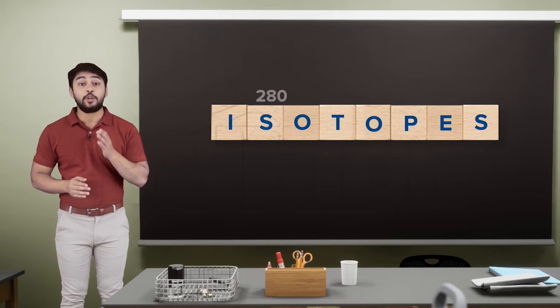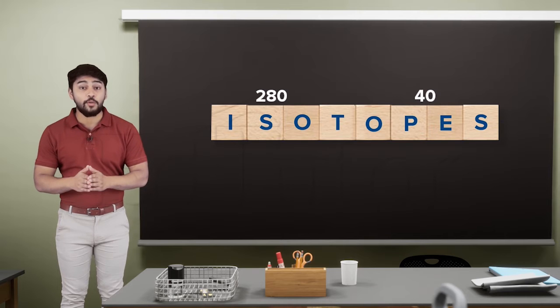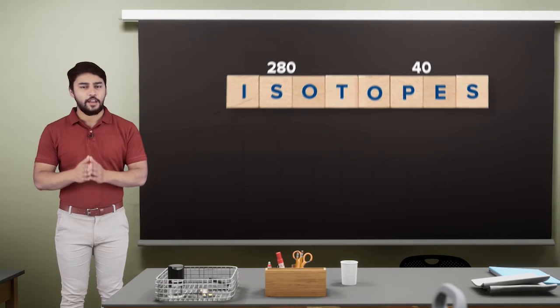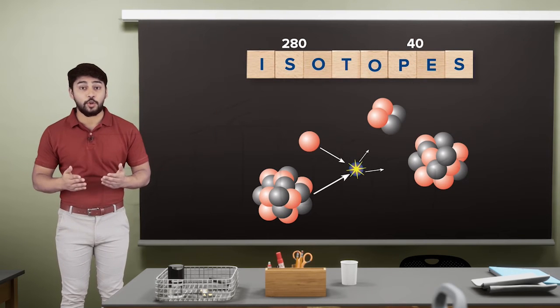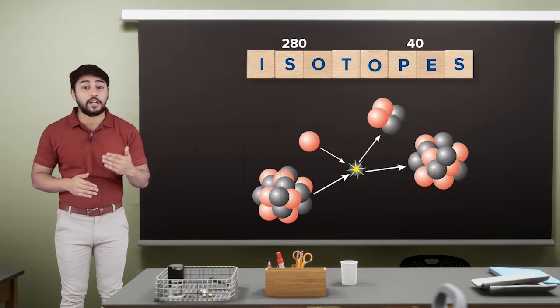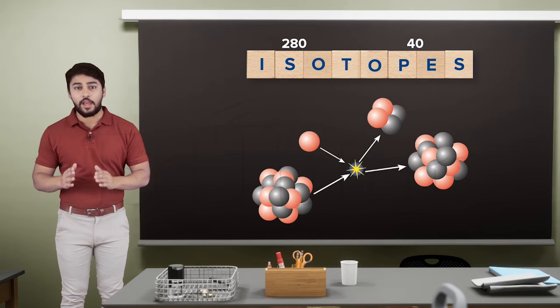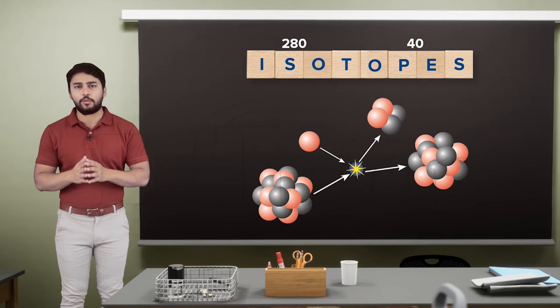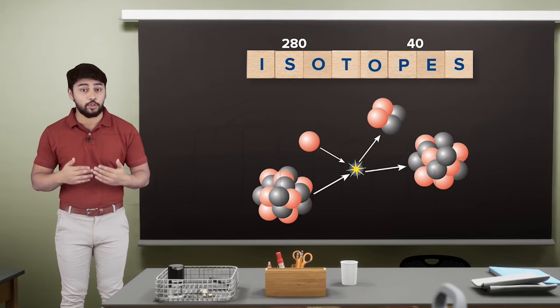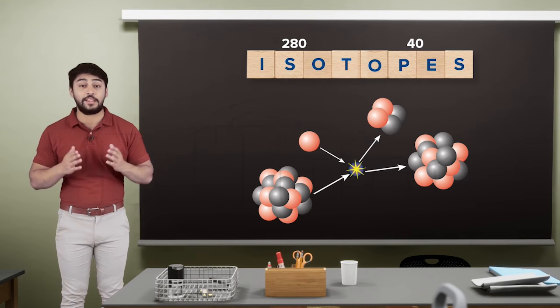These isotopes can also be produced by artificial disintegration. They are quite unstable, and up until now, around 300 radioactive isotopes have been produced by this method.